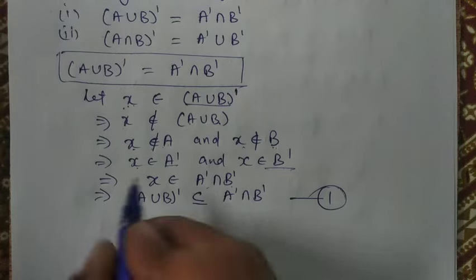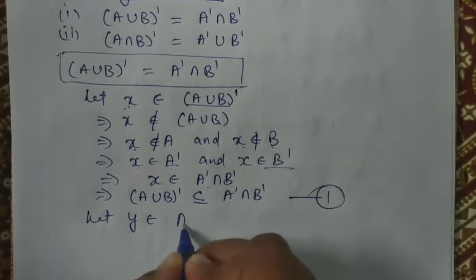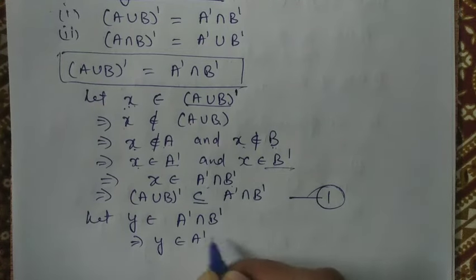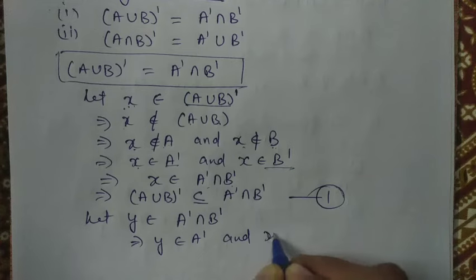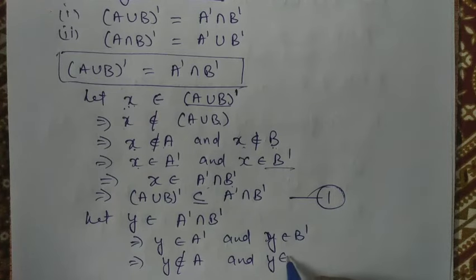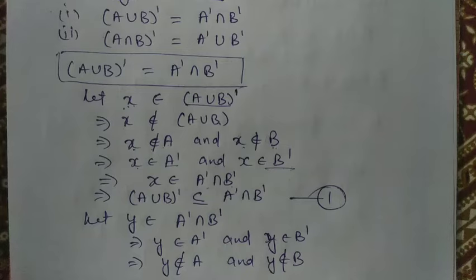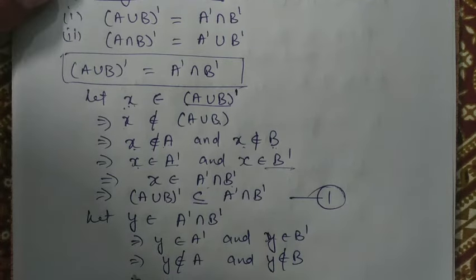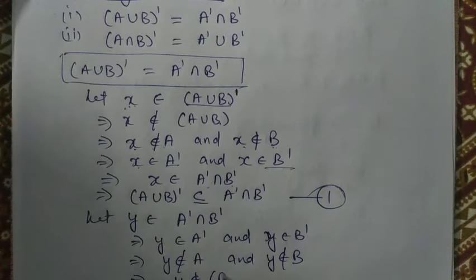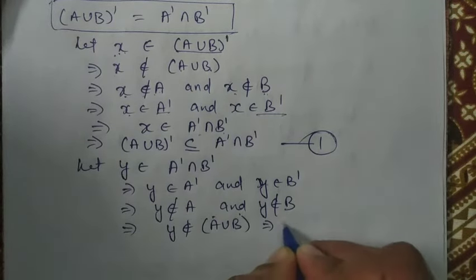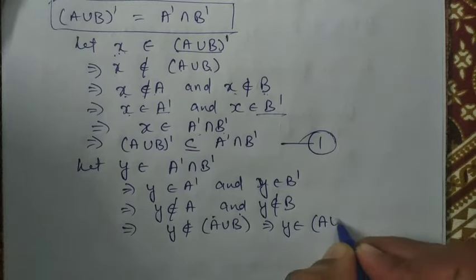Now suppose there is an element Y and it belongs to A complement intersection B complement. So it means this element Y belongs to A complement and it also belongs to B complement. If Y belongs to B complement, it means Y does not belong to B. So if an element Y does not belong to A and also does not belong to B, then this element Y does not belong to A union B. And if Y does not belong to A union B, then Y belongs to the complement of A union B.